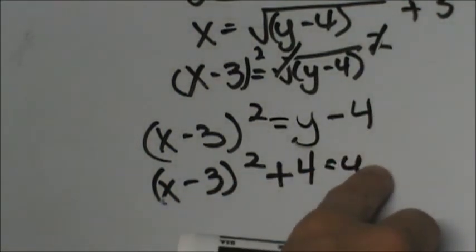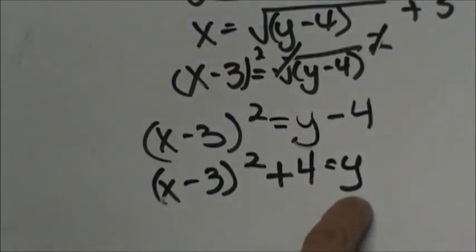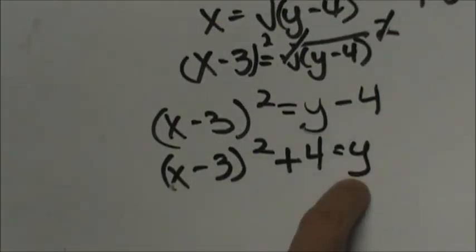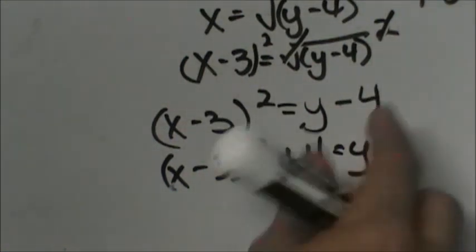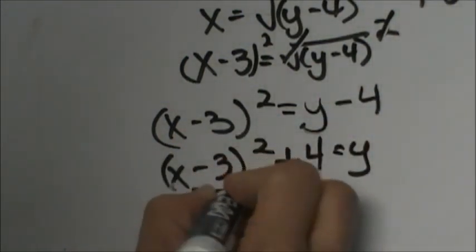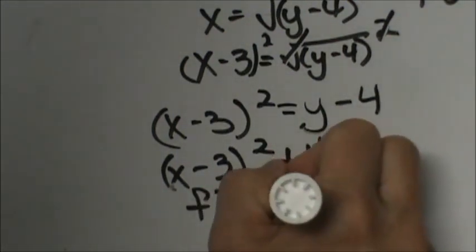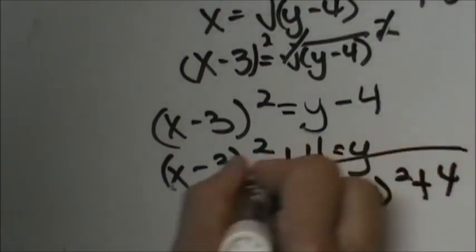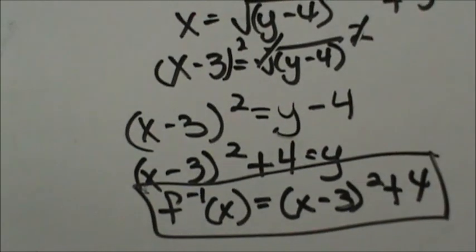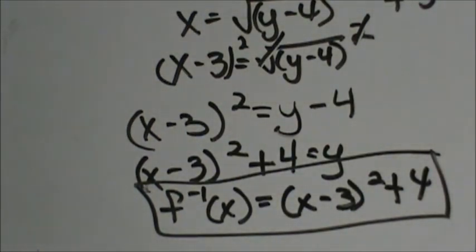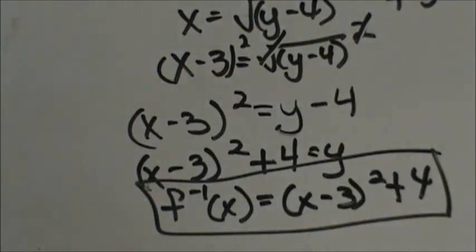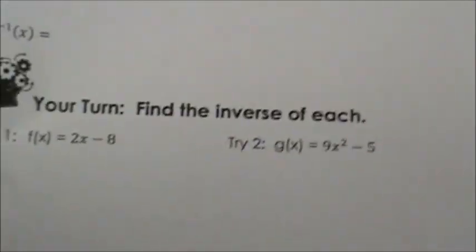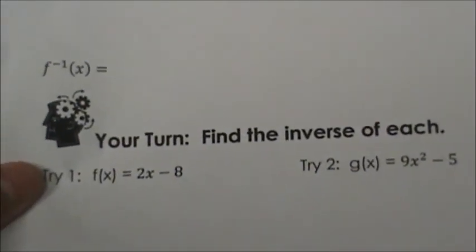Now take it out of x-y notation and flip it back to function notation. Since the original function was f(x), we write f⁻¹(x) equals (x minus 3) squared plus 4. That's how you find the inverse function. At the bottom of your page you've got a couple of examples — go ahead and try to find the inverse of each one, then check those in the course. Good luck, and I hope this video was helpful.